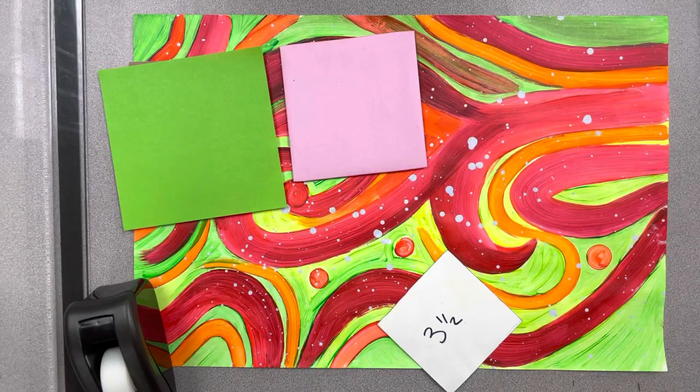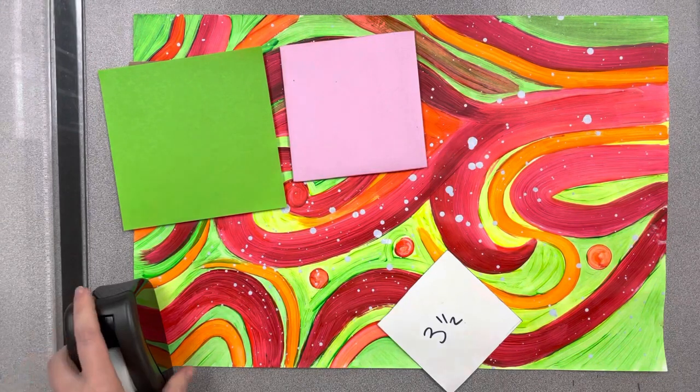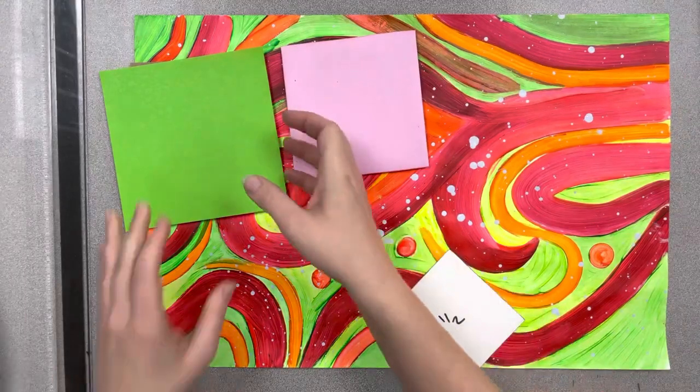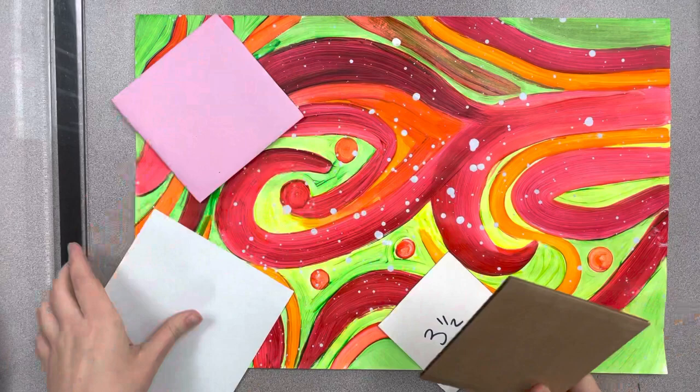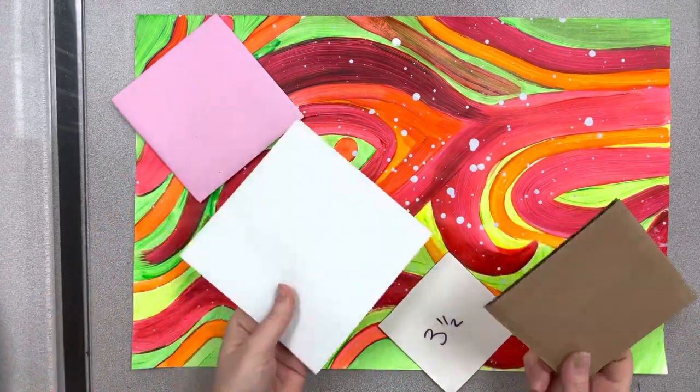All right, let's talk about how to take our abstract painting and get it prepped and ready for our book. The first thing you're going to need is two pieces of cardboard and you'll need a square piece of paper.